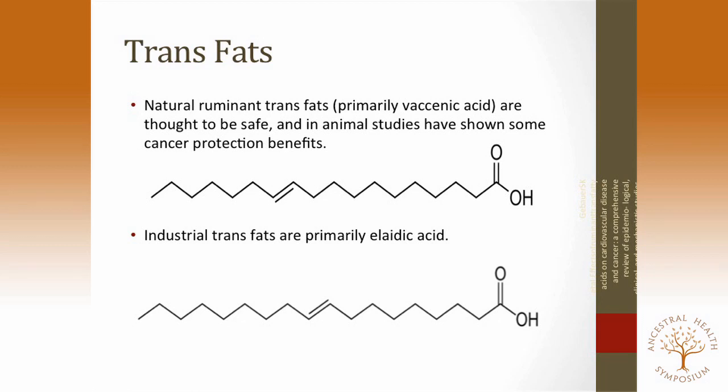What gets confusing are ruminant trans fats, which are actually a different kind — vaccenic acid — found in grass-fed butter, breast milk, and dairy products. It's actually higher in grass-fed products than corn-fed products. The industrial trans fats are elaidic acid. You can't tell much difference visually, but our bodies apparently can. In animal studies it's very clear that the industrial bottom form is harmful, while the ruminant top form seems to have some protective anti-cancer benefits.